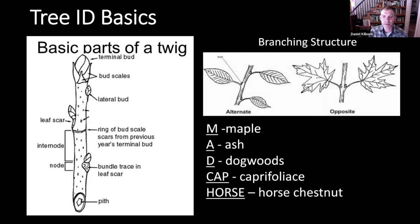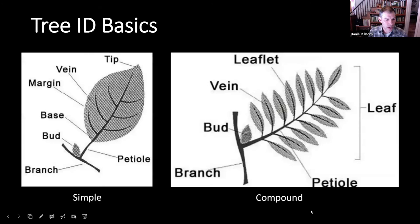A trick to remember which trees are opposite is the mnemonic MADCap Horse, where MAD stands for maples, ashes, and dogwoods. Cap stands for the caprifoliaceae family, which is mostly shrubs and vines, and Horse stands for horse chestnut trees, which aren't native to Vermont. So we'll really be focusing mostly on maples and ashes today.